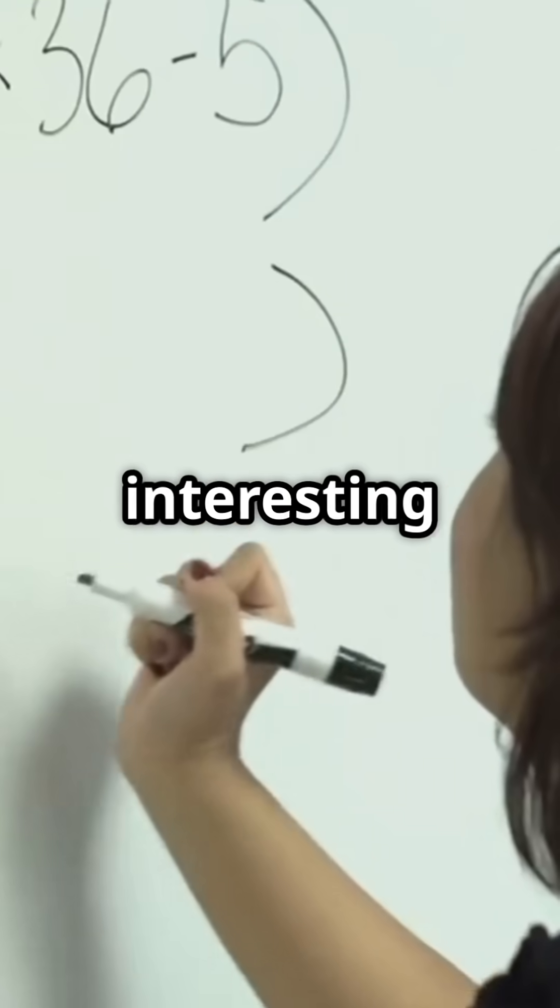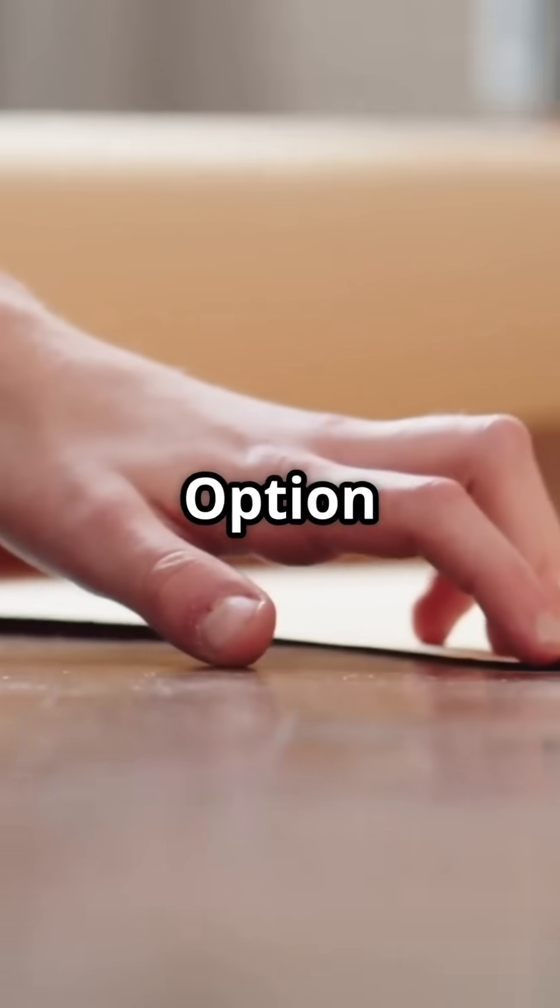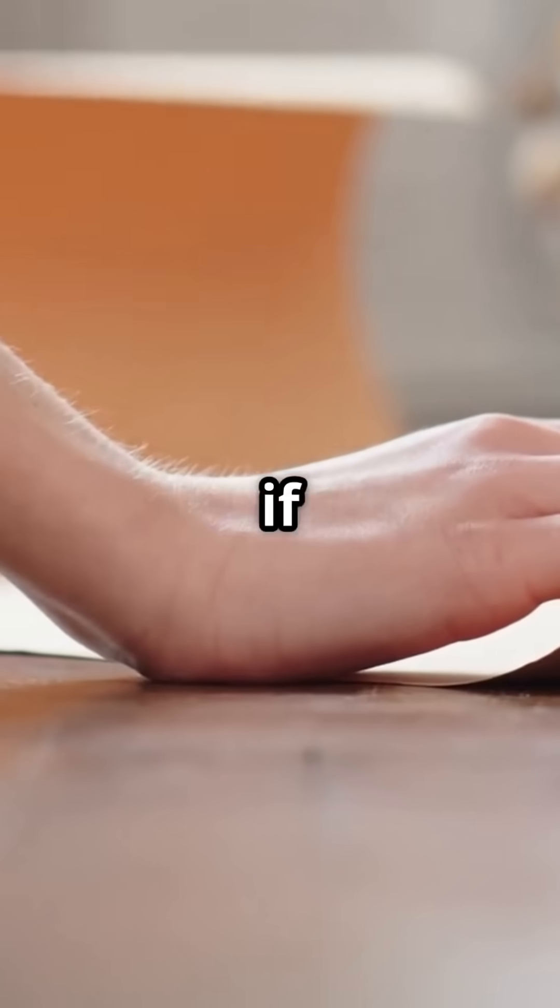Option C is interesting. Was it some kind of broken equation? Option D is tricky. What if the number looks exactly the same when flipped upside down?